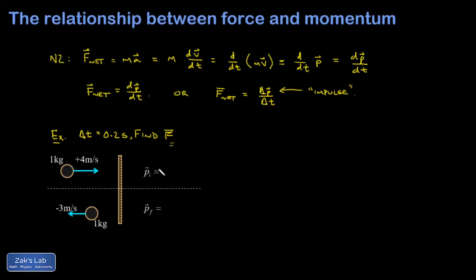So how do you get it with this new tool? F_average is ΔP over Δt. I've got to get the impulse first, which means I need to get the momenta first. My initial momentum is m·v_initial, and that's one kilogram times four meters per second positive, so I get four kilogram meters per second. I'm going to put a plus sign on that just as a reminder that this is a vector quantity and we're using the signs to indicate direction. P_final is m·v_final, that's one kilogram times negative three meters per second, or negative three kilogram meters per second.